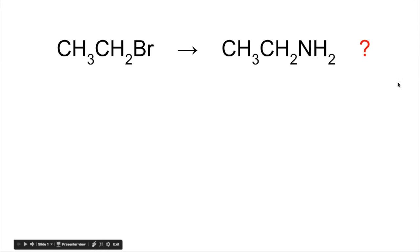Suppose you wanted to convert bromoethane to ethylamine. How would you do that? You would use hot ethanolic ammonia, so that's just ammonia in ethanol, and the ammonia would need to be in excess, otherwise you could get secondary and tertiary amines.